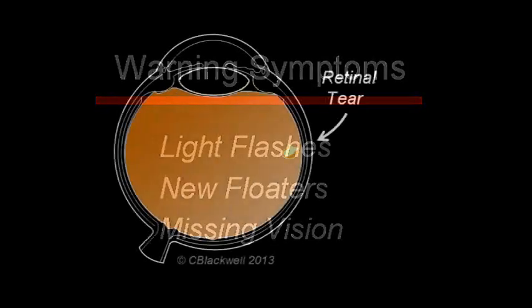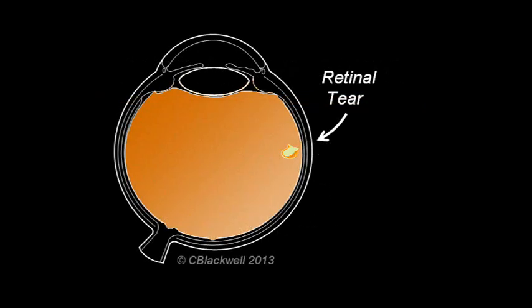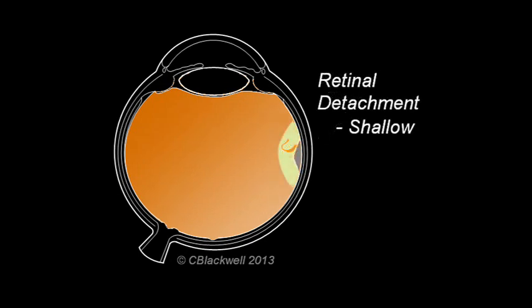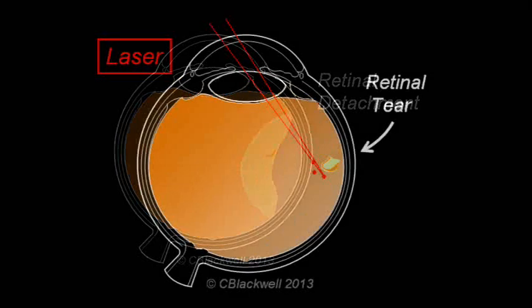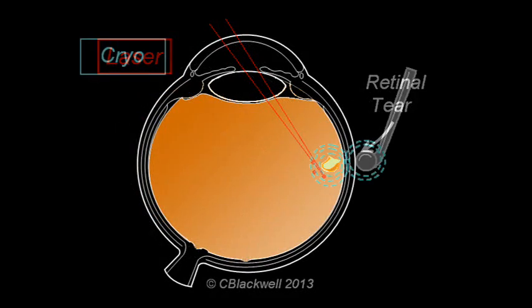To review, the process leading to a retinal detachment typically begins with a retinal tear, followed by a small detachment, which progressively increases in size. A tear is relatively easy to treat using laser or cryo.